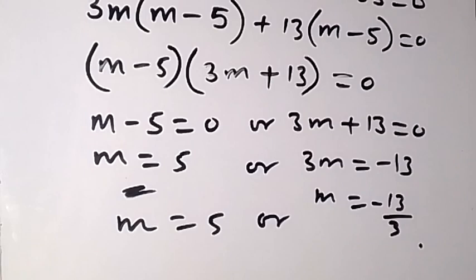So m = 5 or m = -13/3. We have come to the end of the solution. I believe with this method you should be able to factorize any quadratic equation given to you. Thank you for joining us and don't forget to like this video and subscribe to this channel. See you in the next class, bye for now.